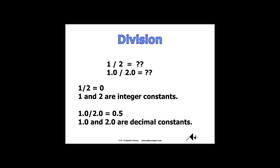So one divided by two, both integers, you get zero. 1.0 divided by 2.0, you have decimals, you're going to get a decimal value.